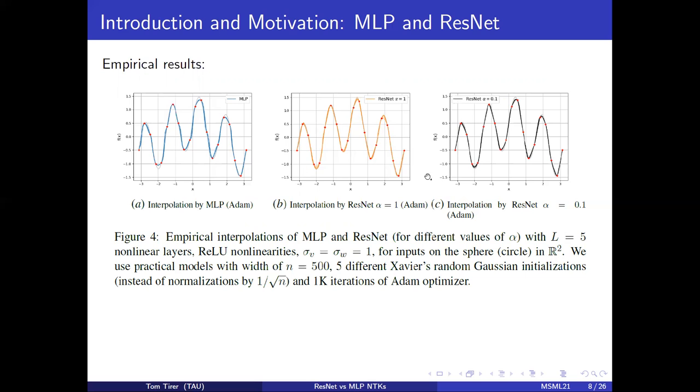Here it equals 1 and here it equals 0.1. And all the settings here are similar to those used in practice. The width is only 500 neurons, and the optimizer is Adam. And you can see that the curve of the MLP is less natural.